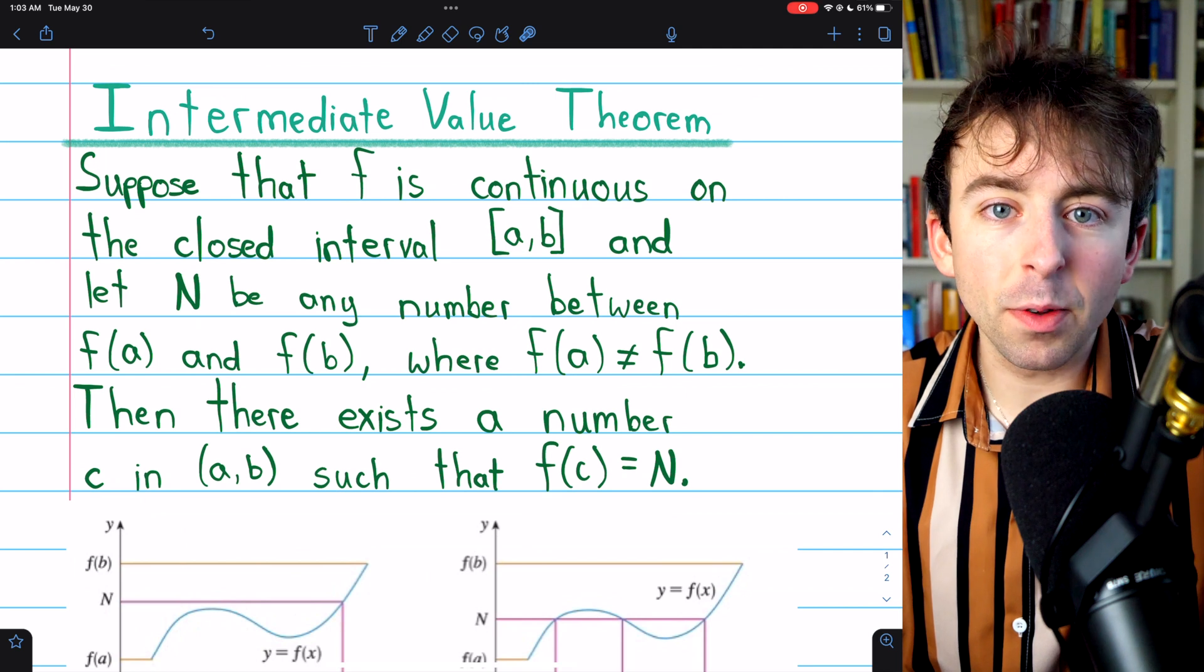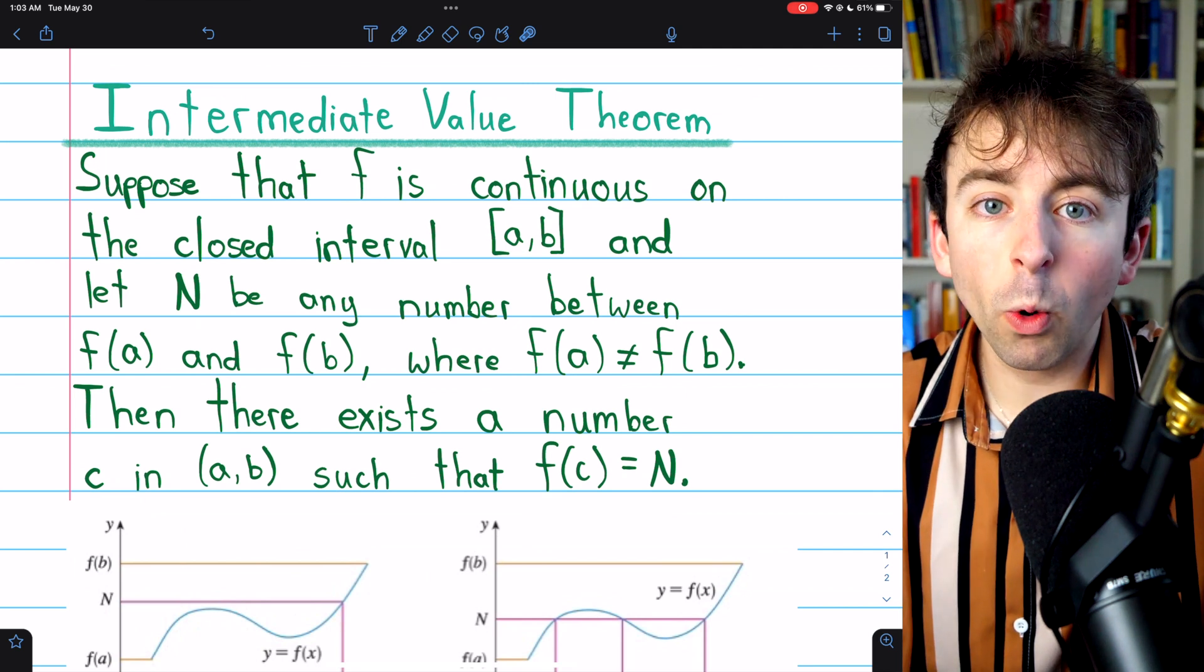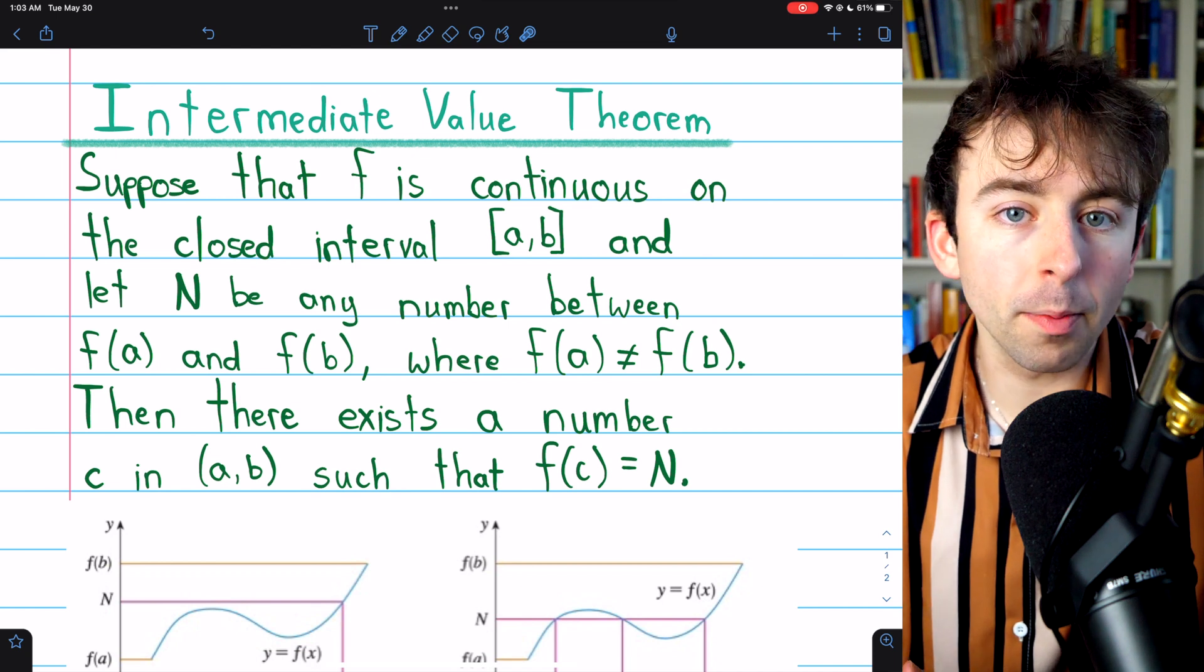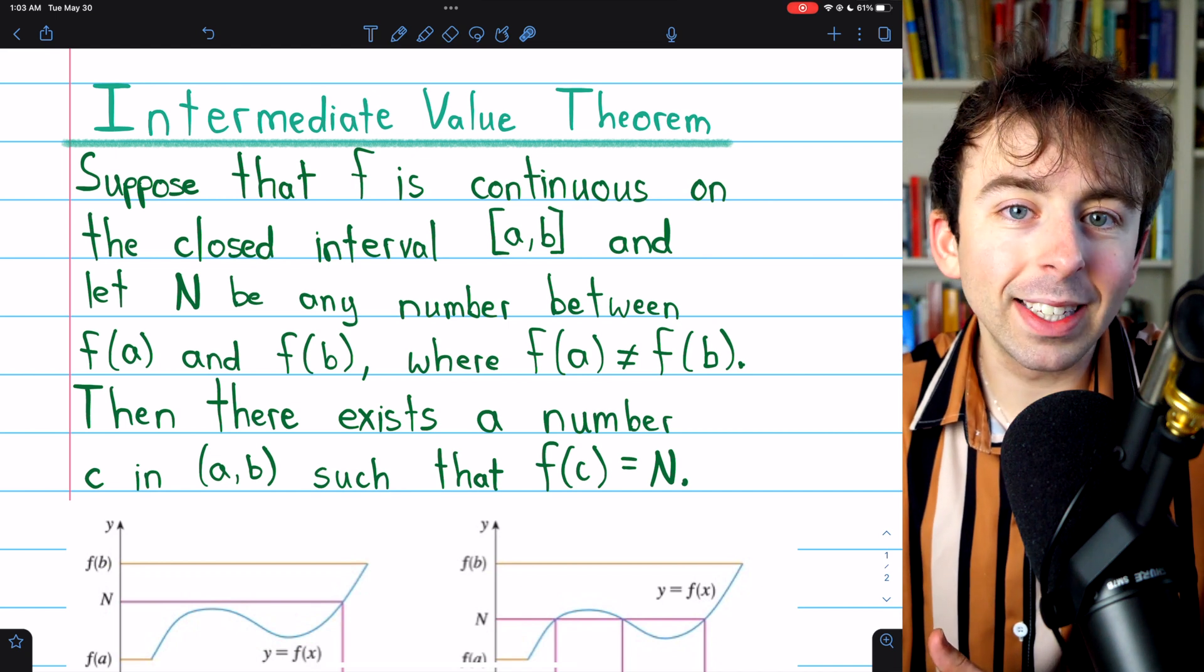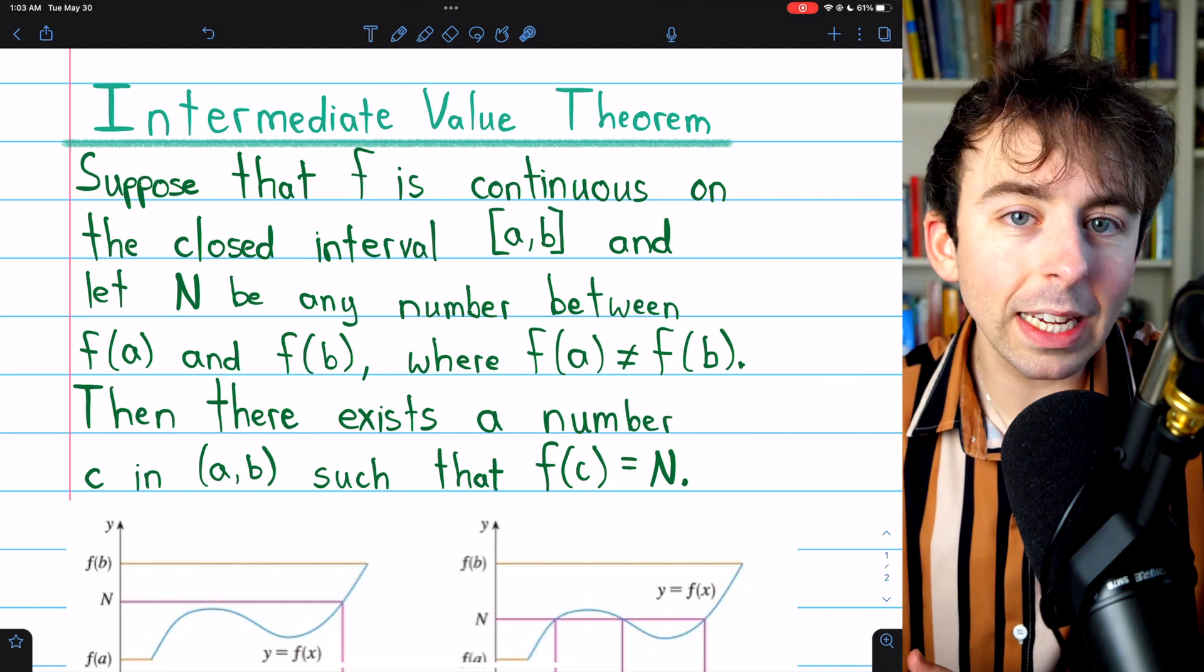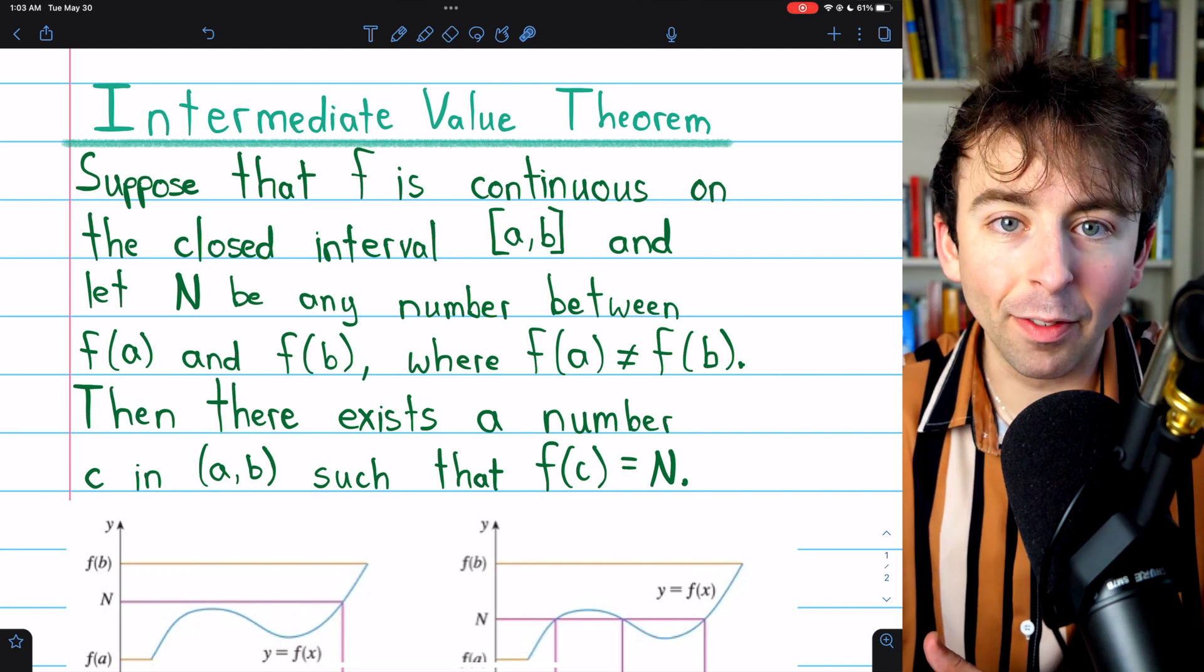So that's a look at the intermediate value theorem and how it's used. Once more, what it says is that if a function is continuous on a closed interval [a,b], then at some point it must take on all of its intermediate values between f(a) and f(b).